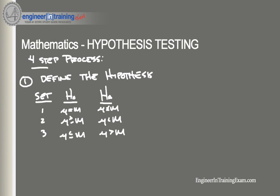Each set makes a statement about how the population mean is related to a specified value, m. The first set of hypotheses is known as a two-tailed test, because an extreme value on either side of the sampling distribution would cause us to reject the null hypothesis — if it's greater than, it's rejected; if it's less than, it's rejected. The other two sets of hypotheses are one-tailed tests, since an extreme value on only one side of the sampling distribution would cause us to reject the null hypothesis. So that's step number one — we need to define the hypotheses.